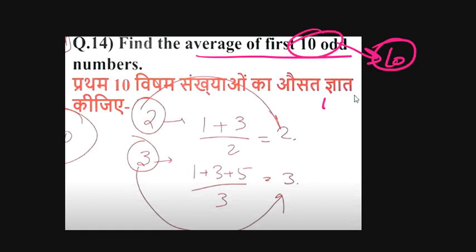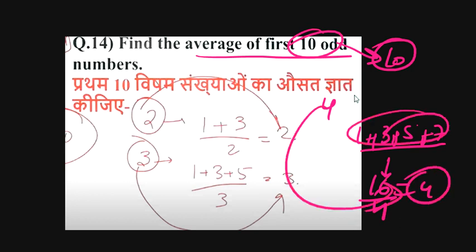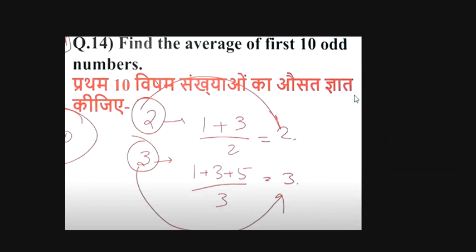Average of the first 4 odd numbers: 1, 3, 5, 7. We add them and it will be 16, so 16 divided by 4 equals 4. So the average of the first 4 odd numbers is 4 — the number itself. The average is proportionally equal to the count.